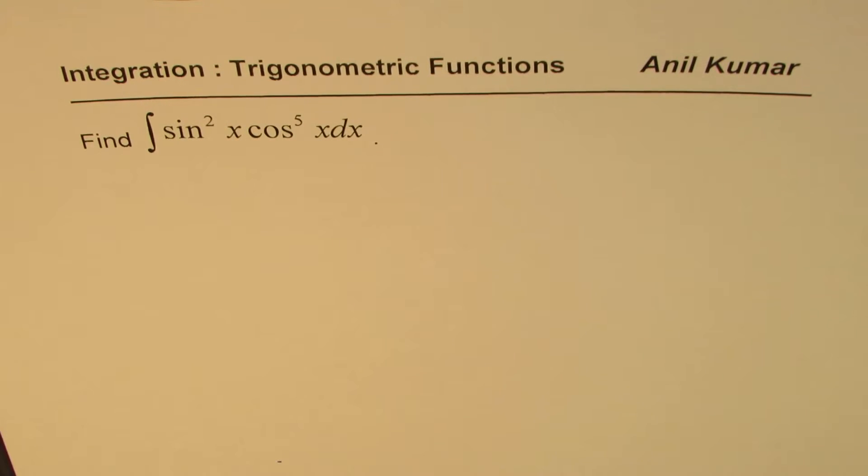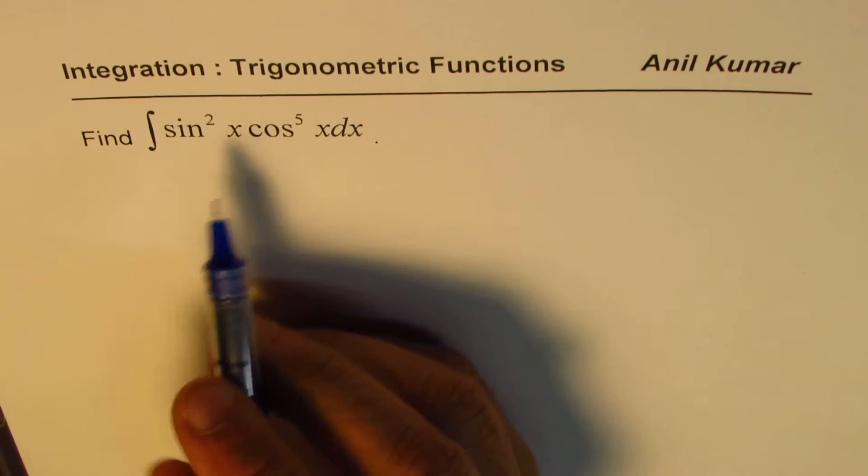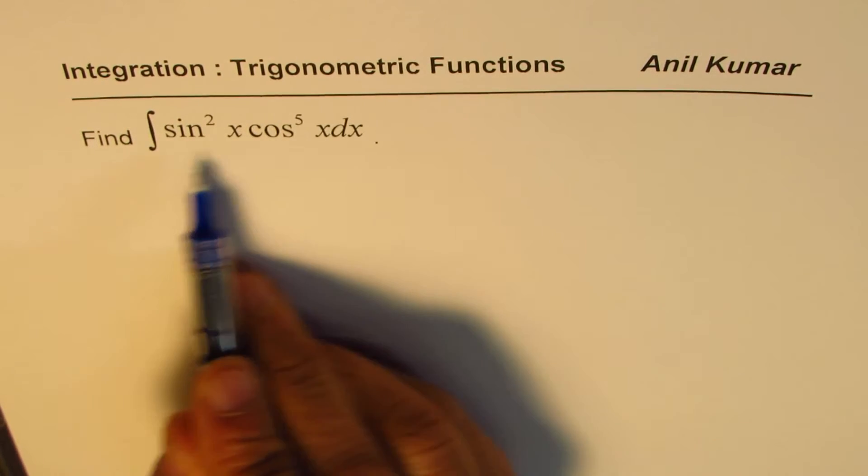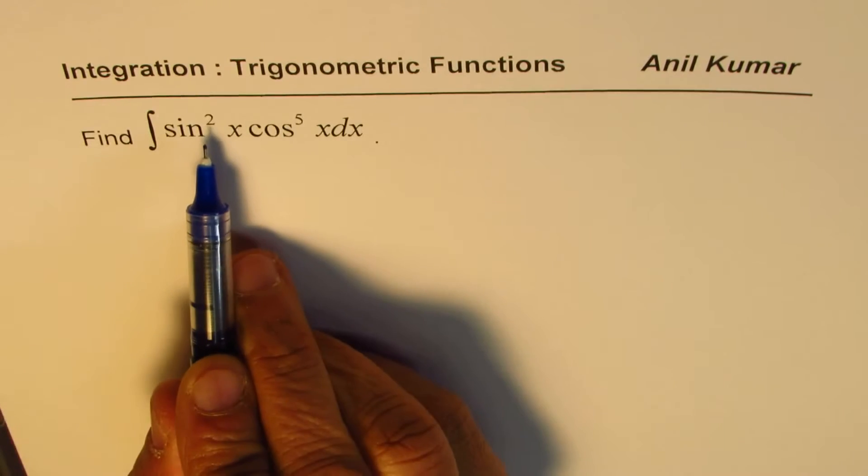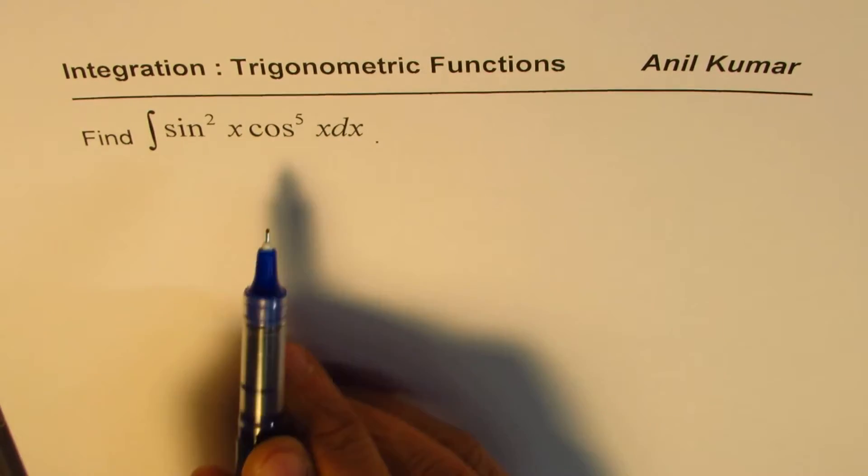I am Anil Kumar and now we are learning to understand how to find integrals for trigonometric functions. Now if we have sine and cosine products as we have in this case, we need to analyze their powers. Which ones are even, which ones are odd?